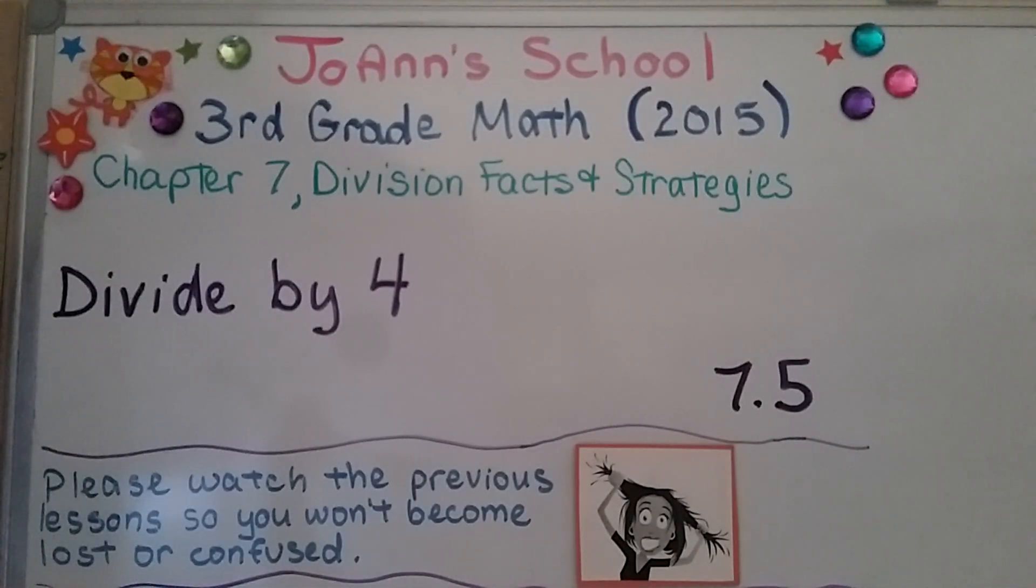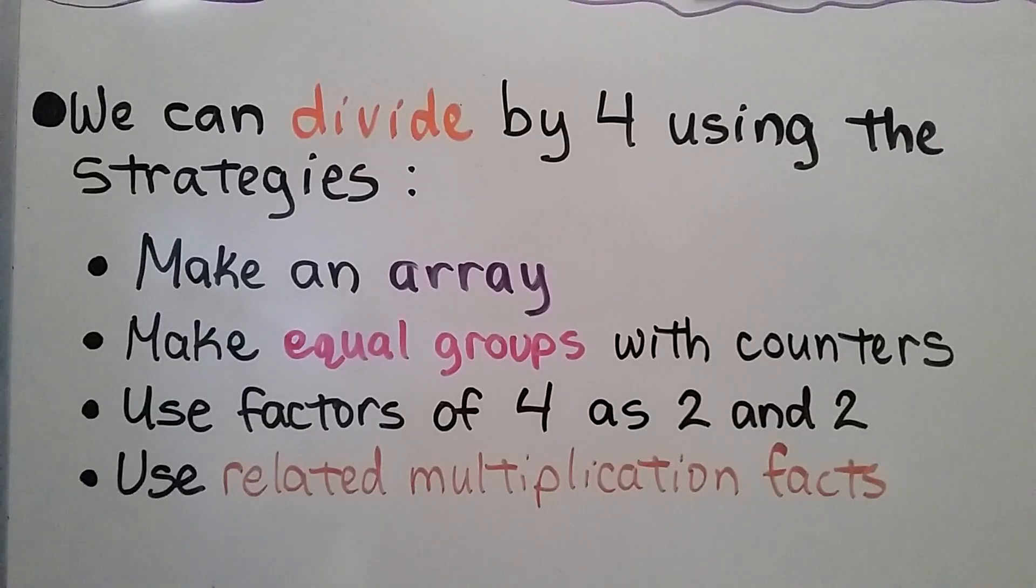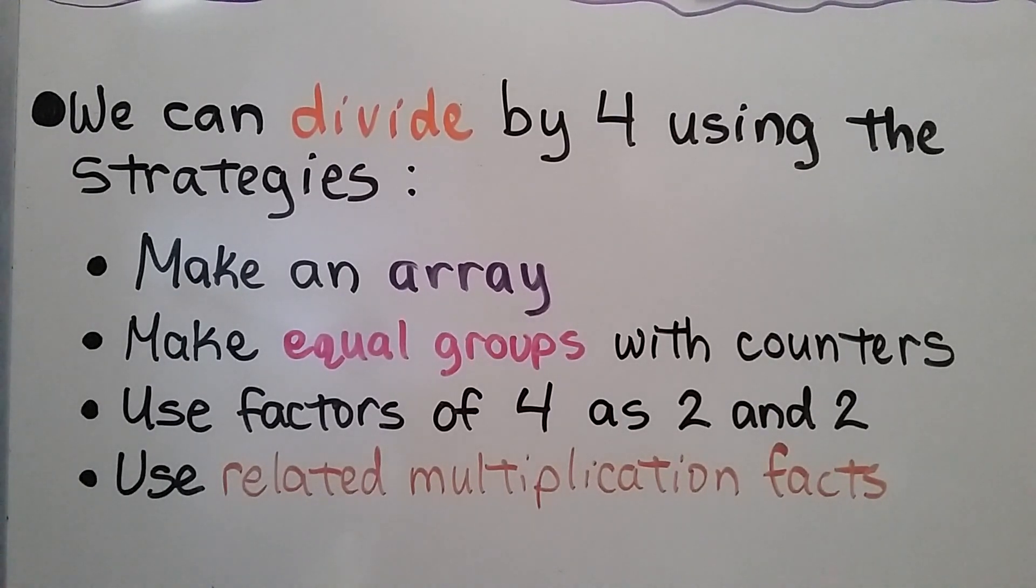Lesson 7.5: Divide by 4. We can divide by 4 using the strategies: make an array, make equal groups with counters, use factors of 4 as 2 and 2, or we can use related multiplication facts.